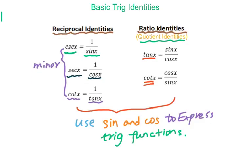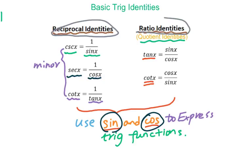For both reciprocal identities and ratio identities, we basically use sine and cosine to express all trig functions. Because in the future, when simplifying trig expressions or verifying trig identities, the very important rule is to change everything into sine and cosine. So you have to use either reciprocal identities or ratio identities to do that.